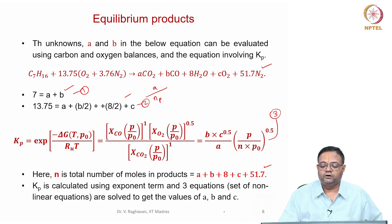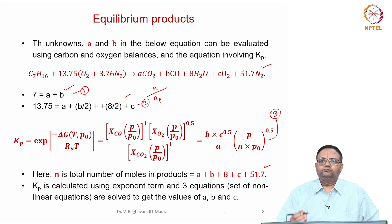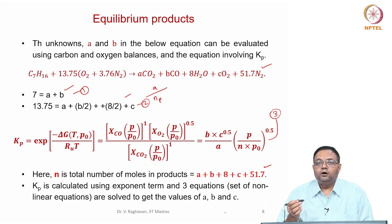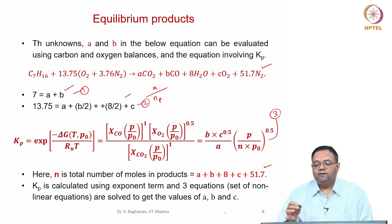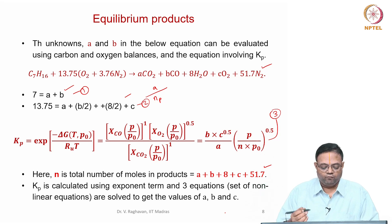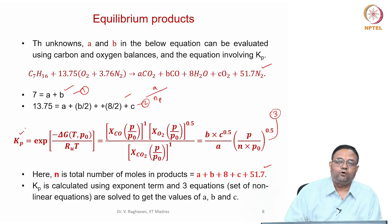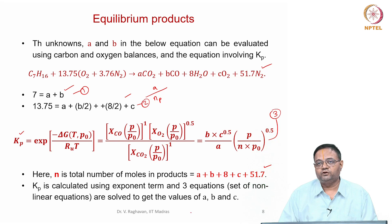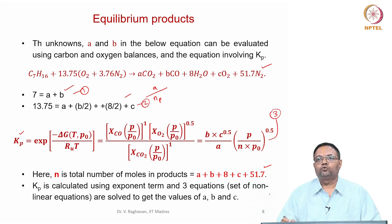Once A, B, and C are obtained, the product composition is complete. For cases where products contain incomplete combustion species like CO or H2, we involve several elementary equations, find Kp for each, and generate enough equations so the number of equations equals the number of unknowns.